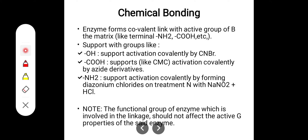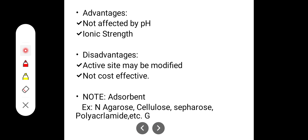Coming to the chemical method — covalent bonding: the enzyme forms a covalent link with active groups of the matrix, such as terminal -NH₂ or -COOH (carboxylic) groups. Support with hydroxyl group or carboxylic acid functional groups is used, along with -NH₂ support activation. Note: the functional group of the enzyme involved in the linkage should not affect the active property of the enzyme. Advantages: not affected by pH and ionic strength. Disadvantages: active site may be modified and it is not cost effective. Adsorbents used include agarose, cellulose, Sepharose, and polyacrylamide.